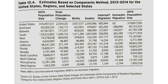This is an example of a component method that makes use of regions and states instead of age and sex specific subpopulations. This is a more spatially oriented method. What you see here is the 2013 population — the total United States population broken out by region and by state.